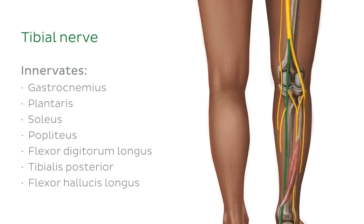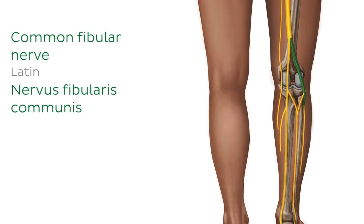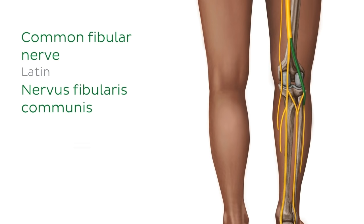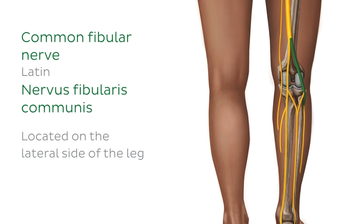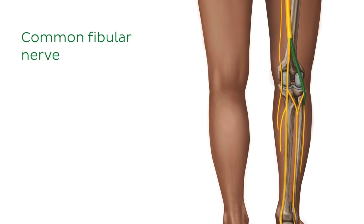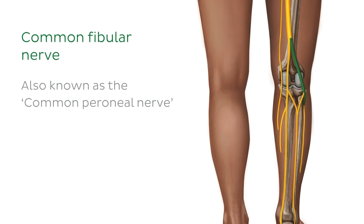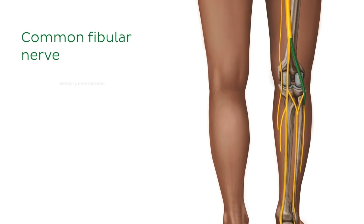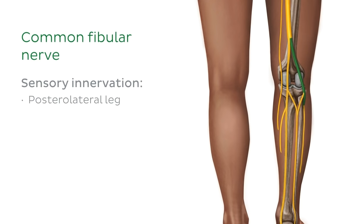We can see the common fibular nerve, which is located on the lateral side of the leg. It's actually closely associated with the fibula, which is where it gets its name from. The common fibular nerve is also known as the common peroneal nerve. The common fibular nerve provides sensory innervation to the posterolateral leg.